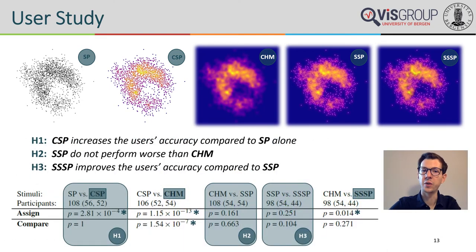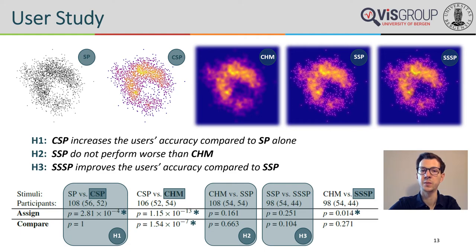In total, we had three hypotheses. H1: density-dependent color coding of individual scatter plot points increases the user's accuracy of estimating density values compared to scatter plots with alpha blending alone. H2: sunspot plots do not perform worse than continuous heatmaps for absolute and relative density estimations. H3: applying an illumination model in combination with ambient occlusion shading to sunspot plots improves the user's accuracy when estimating density values.